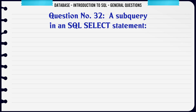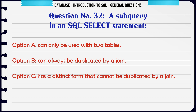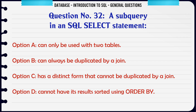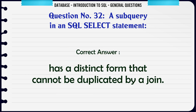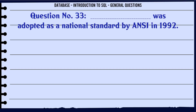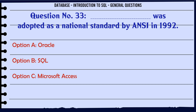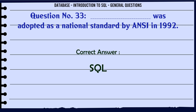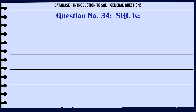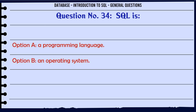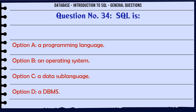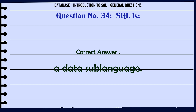A subquery in an SQL SELECT statement: A. Can only be used with two tables. B. Can always be duplicated by a join. C. Has a distinct form that cannot be duplicated by a join. D. Cannot have its results sorted using ORDER BY. The correct answer is: has a distinct form that cannot be duplicated by a join. What was adopted as a national standard by ANSI in 1992? A. Oracle. B. SQL. C. Microsoft Access. D. dBase. The correct answer is SQL. SQL is: A. A programming language. B. An operating system. C. A data sub-language. D. A DBMS. The correct answer is: a data sub-language.